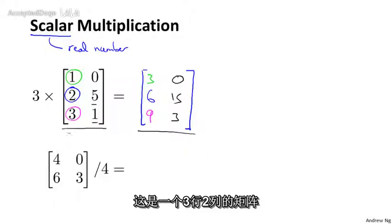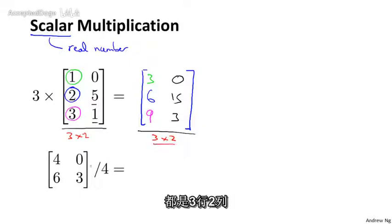And you notice again, this is a 3 by 2 matrix, and the result is a matrix of the same dimension. So this is a 3 by 2. Both of these are 3 by 2 dimensional matrices.